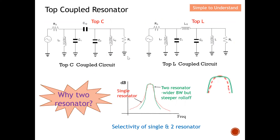Now I'm going to explain why we need two resonators. Looking at this frequency versus dB diagram, the dashed red line represents the single resonator frequency response and the green solid line represents the dual resonator. You can see that by having a dual resonator, we achieve a steeper roll-off factor — a steeper skirt. This is desirable because for an ideal filter we want the roll-off to be as steep as possible.